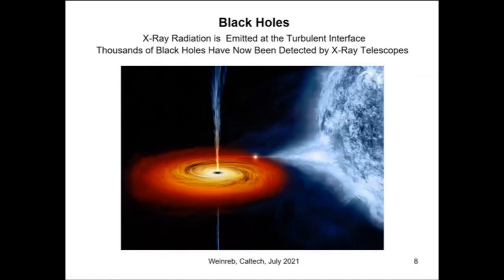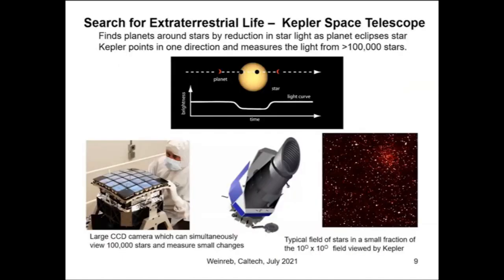The next science-fiction-like structure is black holes — regions so dense with gravity that even light cannot escape. At the edges of black holes there is turbulence as stars get swallowed, which creates X-rays that are observed. So black holes are now observed by looking at what occurs on their periphery.